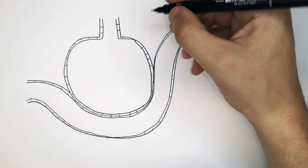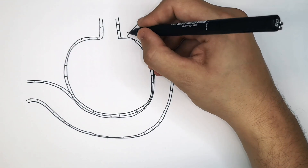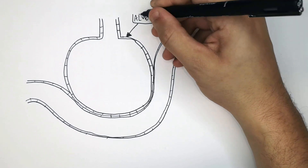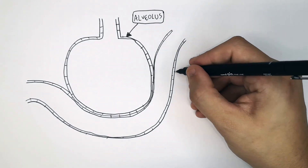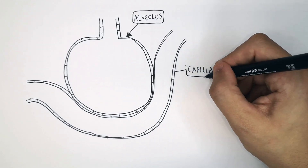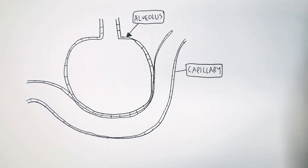So why does an alveoli have a one-cell-thick wall? As you can see here, the alveoli, which is the air sac,